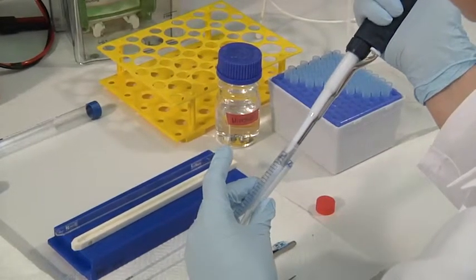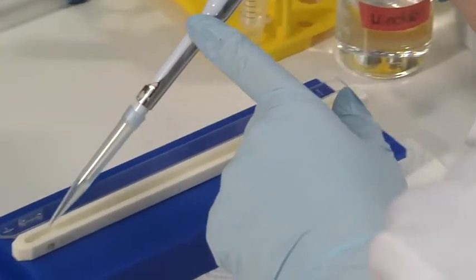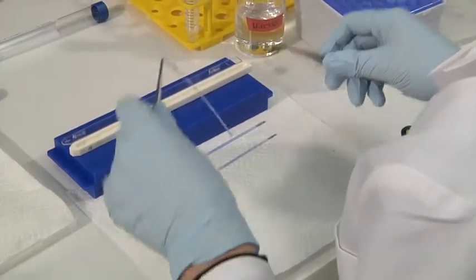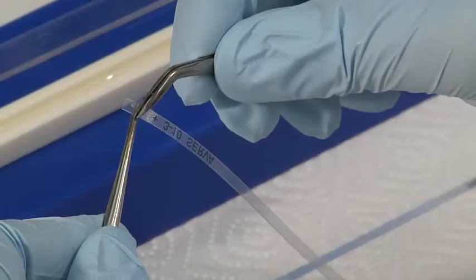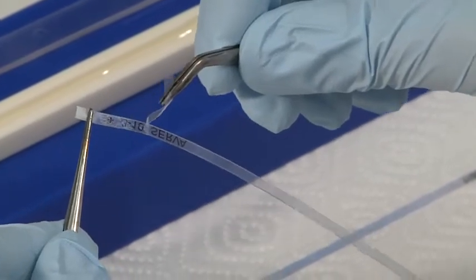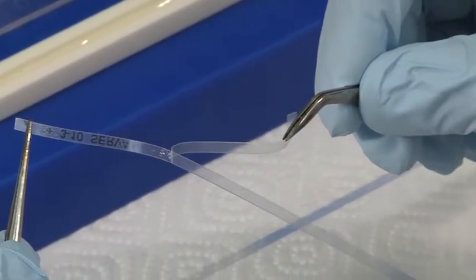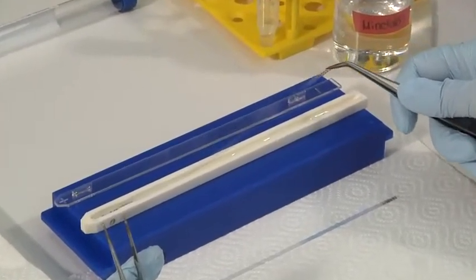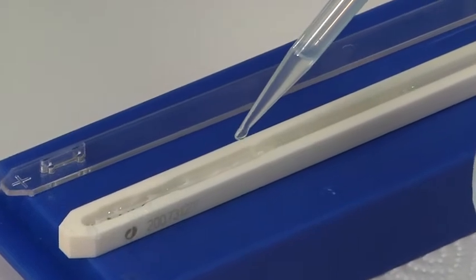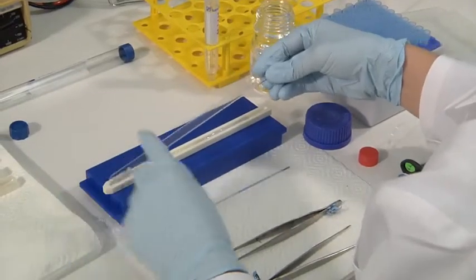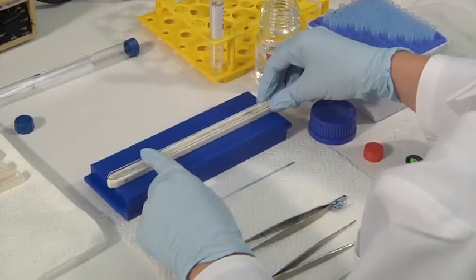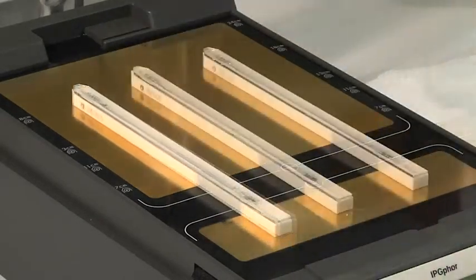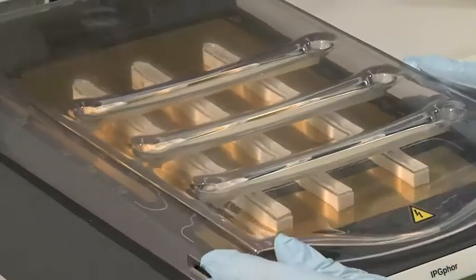The second method starts with the first one-dimensional separation, called isoelectric focusing. For this, we use an immobilized pH gradient gel. The IPG strip is put into a case, which is then filled up with mineral oil. We close the case and transfer it to the IPG phoresis machine. This approach separates proteins by their different isoelectric points.